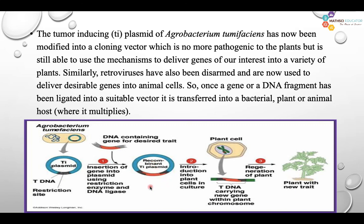This one is the recombinant Ti plasmid in which we have kept our interested DNA fragment. Then we introduce the Ti plasmid into the plant cell using Agrobacterium tumefaciens. As it is incorporated into the cell, along with the plasmid, our interested gene can also be delivered into the plant, forming a new strain of that plant. This is how Agrobacterium tumefaciens delivers DNA into the plant cell, and because of that ability, we use it as a vector for plant and animal cells.